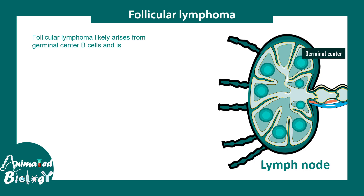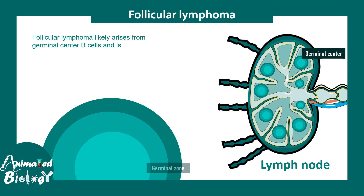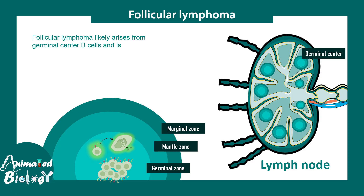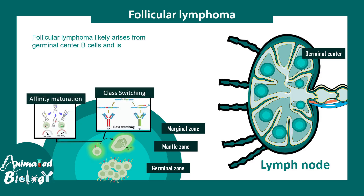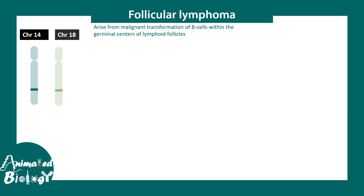Follicular lymphoma, as the name suggests, involves affected lymphoid follicles. There are three distinct zones: germinal zone, mantle zone, and marginal zone. In follicular lymphoma it is the germinal center B cells that are affected — an over-proliferation of B cells where important processes like class switching and affinity maturation normally happen. BCL-2 gene is strongly associated with this particular follicular lymphoma.